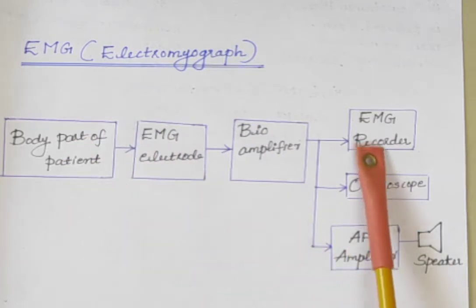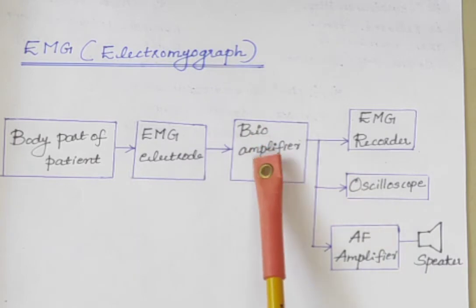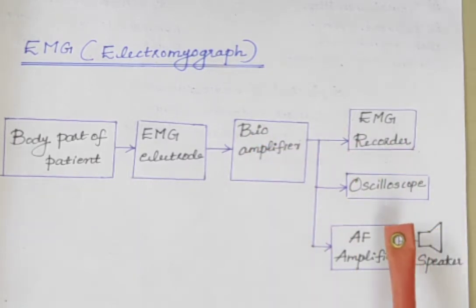The block diagram of EMG is shown here. It consists of electrodes, bioamplifier, EMG recorder, oscilloscope, audio frequency amplifier and speaker.